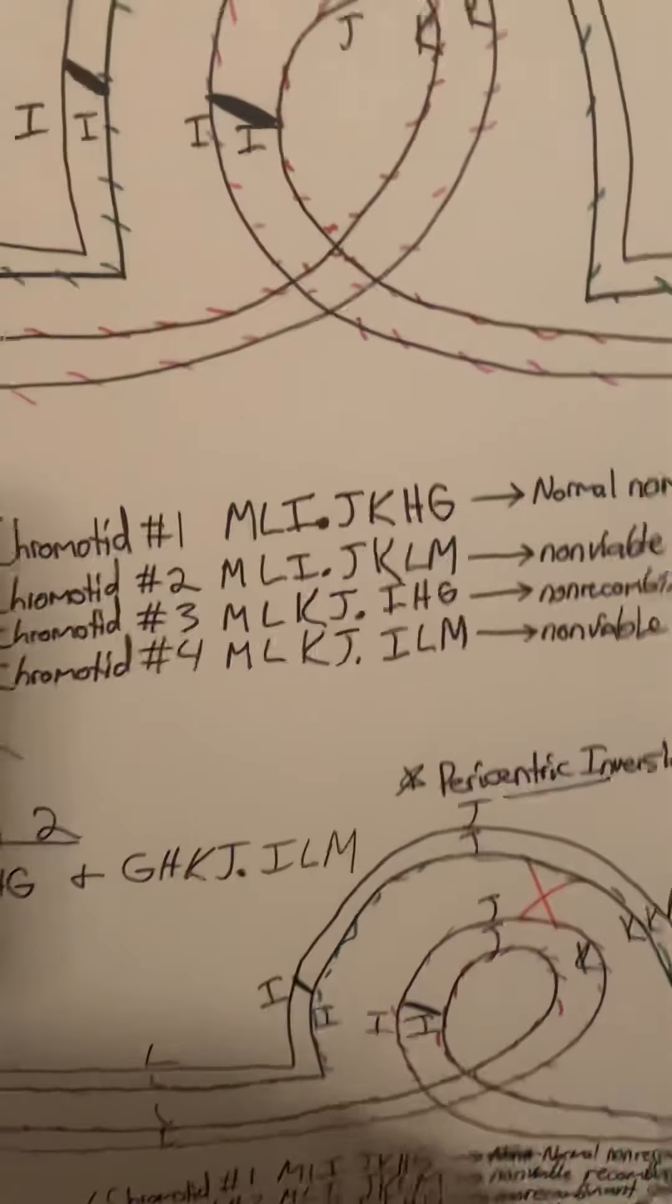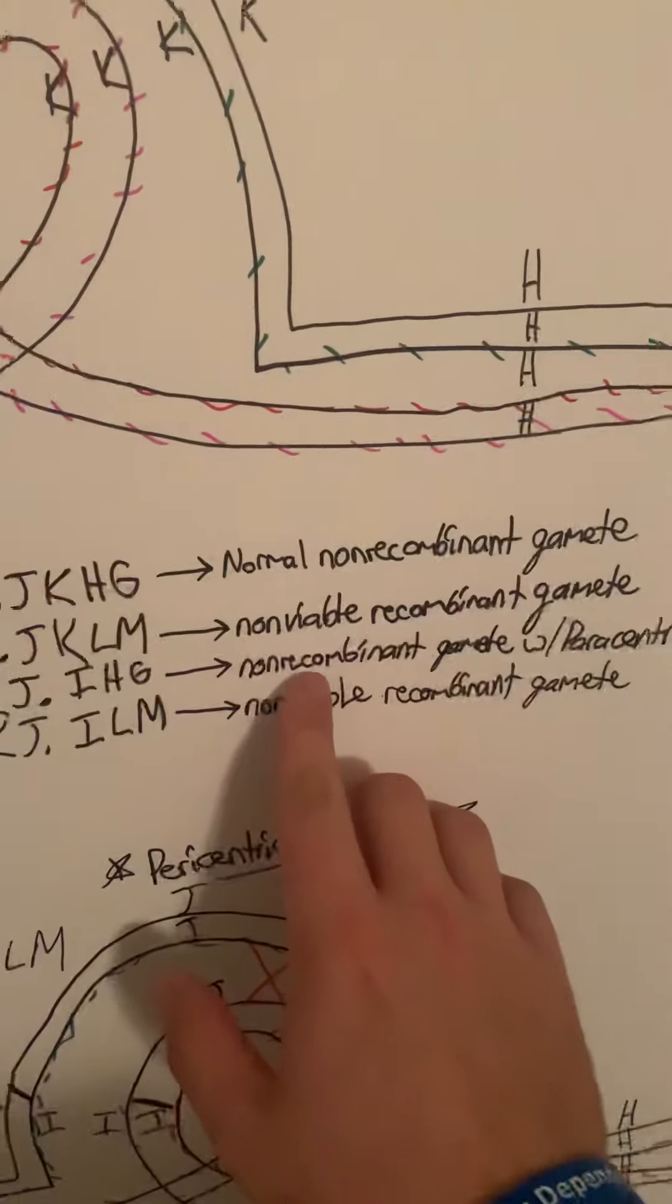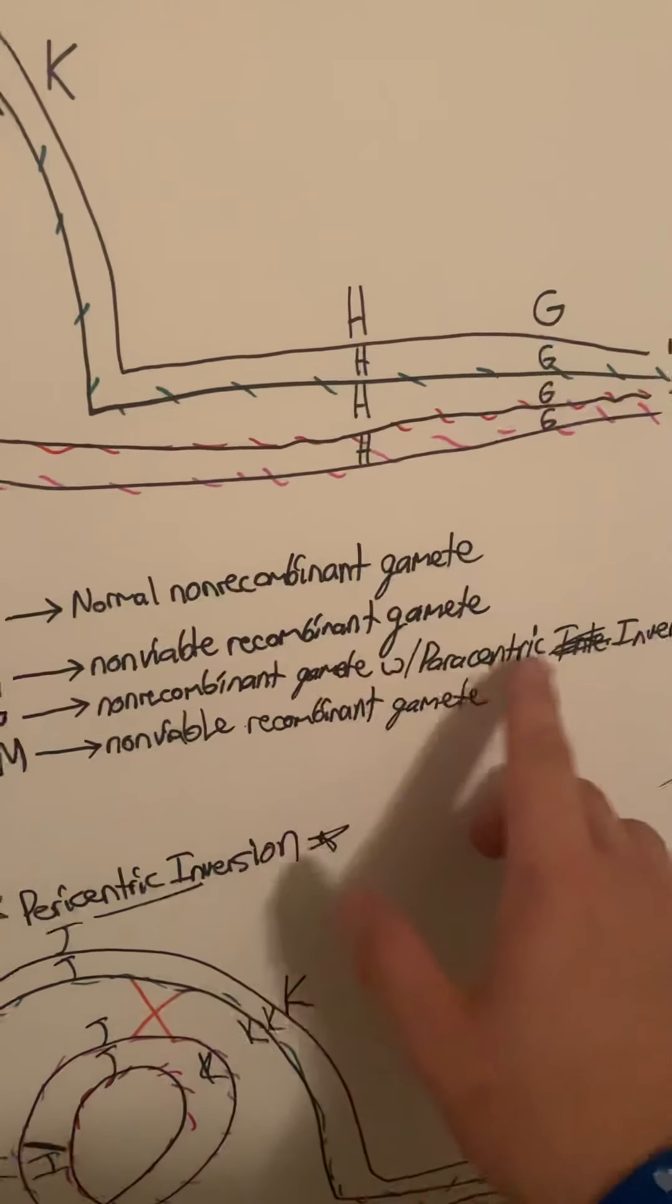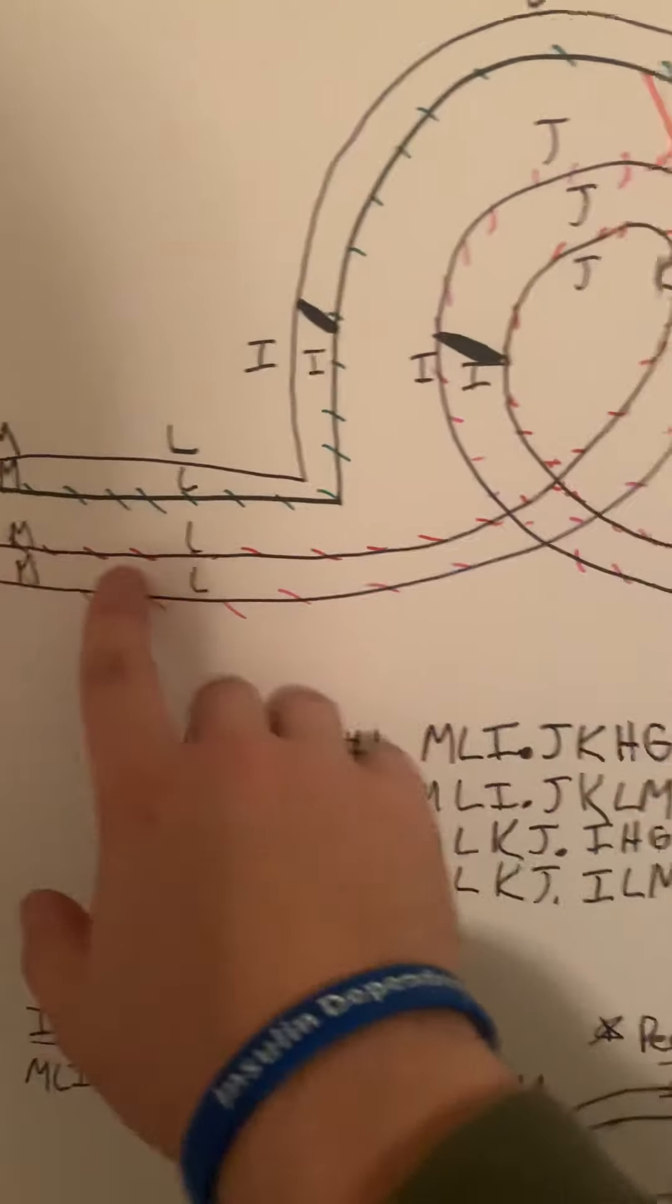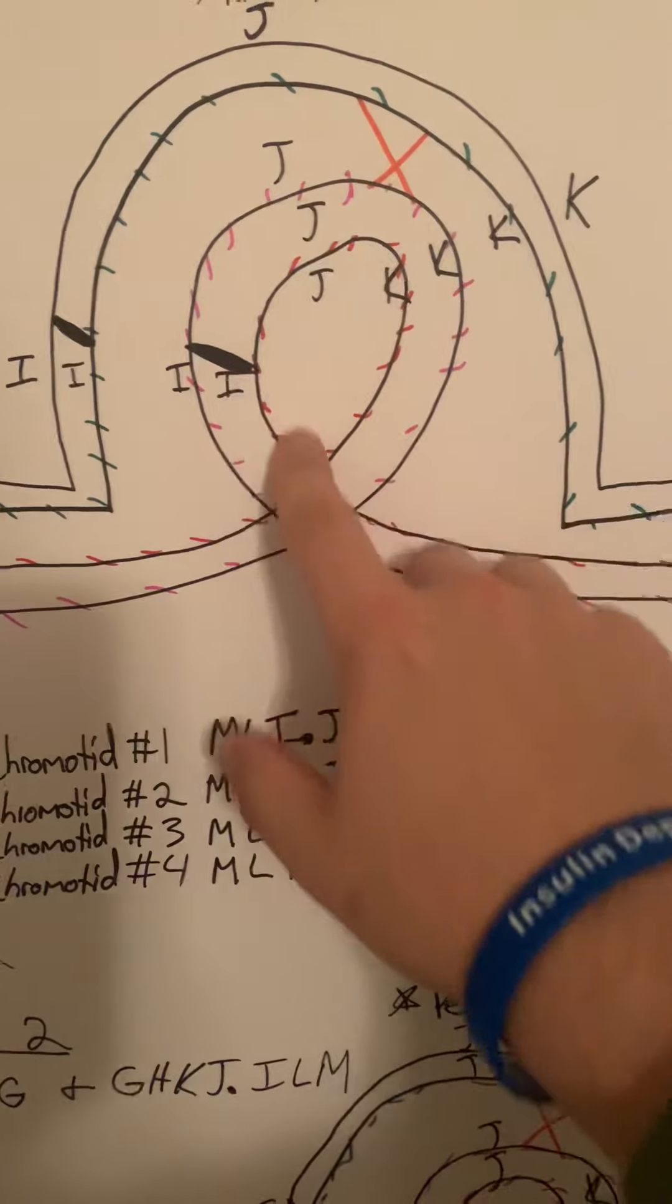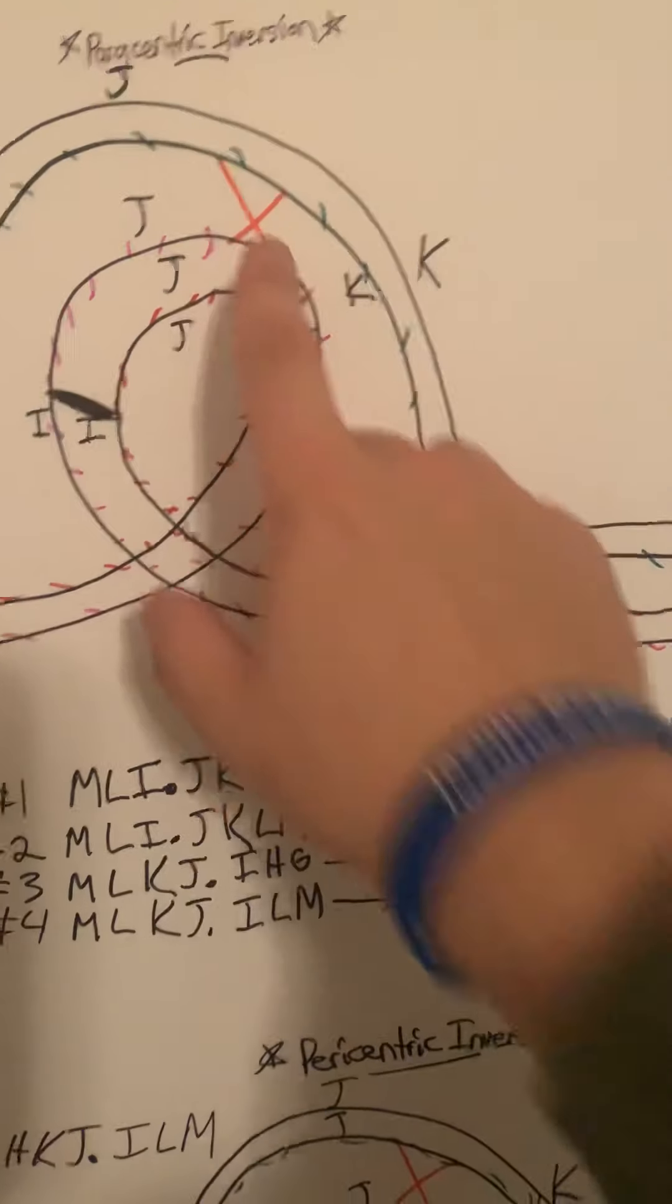For chromosome 3, it would be a non-recombinant gamete with a paracentric inversion because if you follow it all the way in here, you can tell it is not involved with the crossover right here.